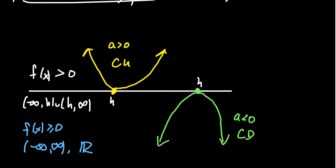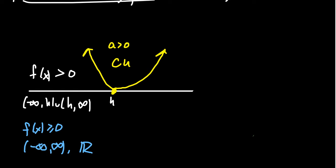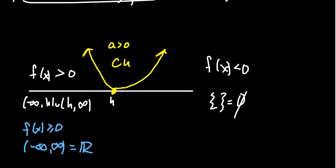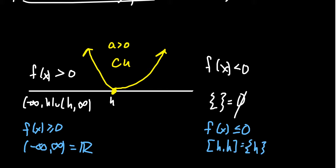On the other hand, if you want f of x less than 0 — things below the x-axis — there's nothing there, so we find that the solution would be the empty set. It's possible you get no solution if you want things that are below the axis. If you want f of x less than or equal to 0, everything below the x-axis is nothing, and the only thing on the x-axis is the vertex h itself, giving you just the single number h. So the discriminant equals 0 case comes down to: everything but the vertex, everything, nothing, or nothing but the vertex.